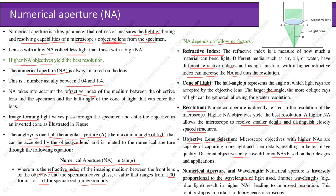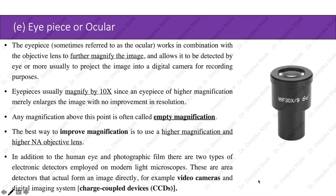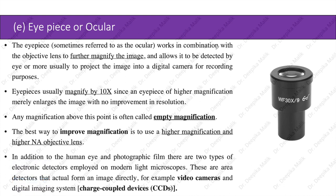The eyepiece or ocular lens works in combination with the objective lens to further magnify the image and allows it to be detected by eye or projected into a digital camera for recording. Eyepieces usually magnify by 10x; a higher magnification eyepiece merely enlarges the image with no improvement in resolution — any magnification above this point is called empty magnification.